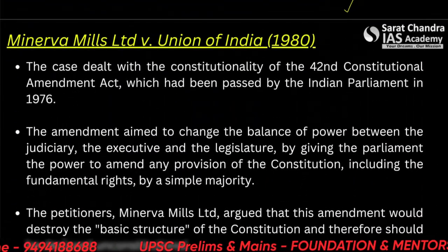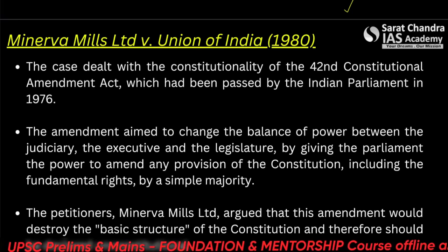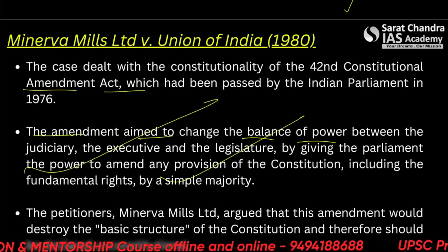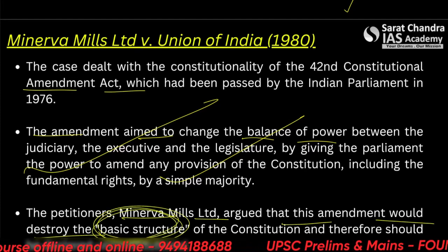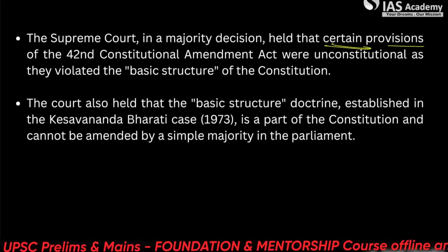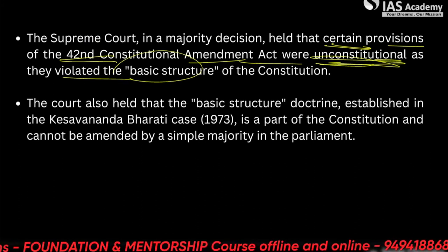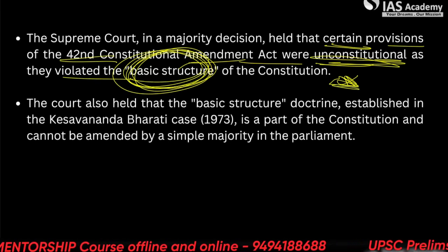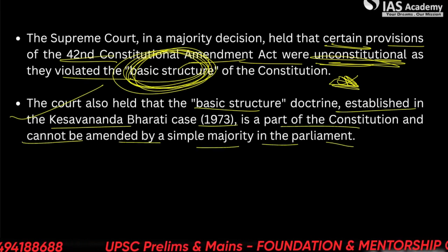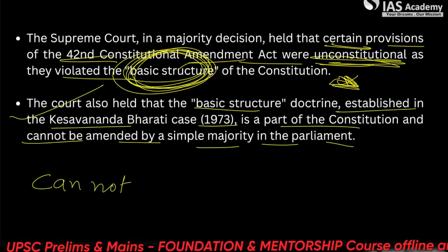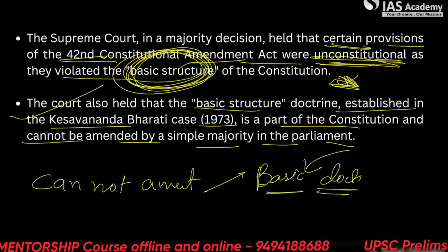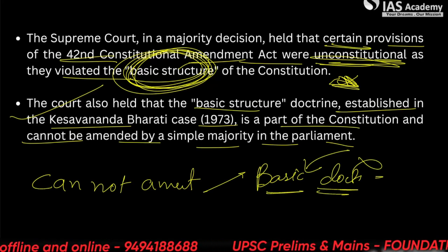Minerva Mills pushed a case against this. The case dealt with the constitutionality of the 42nd Constitutional Amendment Act, which aimed to change the balance of power. The petitioner, Minerva Mills, argued that the amendment would destroy the basic structure of the constitution and should therefore be declared unconstitutional. The Supreme Court in a majority decision held that 13 provisions of the 42nd Constitutional Amendment Act were unconstitutional as they violated the basic structure of the constitution. The court also held that the basic structure established in the Keshwanand Bharati case is a part of the constitution and cannot be amended by a simple majority in parliament — so the basic doctrine itself cannot be amended.